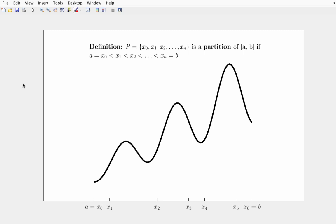x0, x1 through xn. It's a finite set of points, where the first point is a. You see a equals x0. The last point is b. Here we have a partition for n equals 6.